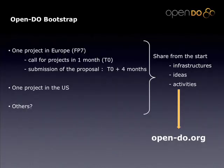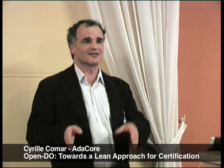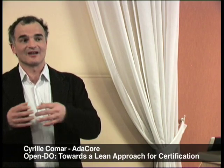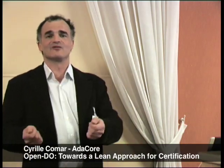We are already planning to work on an FP7 program — that is to say, a European community-funded project. We know that the call for tender will appear in one month and the submission of the proposal is due in four months. On the other side of the Atlantic, we will start to find opportunities for funding so that we can start a project in the U.S. at the same time with the key players over there. What we want to achieve is to ensure that those two projects — bringing together industry, academics, and tool providers on both sides of the Atlantic — can share from the start some infrastructure, some ideas, and some activities, creating a community that will be bootstrapped by different projects to which everybody could contribute wherever they are.